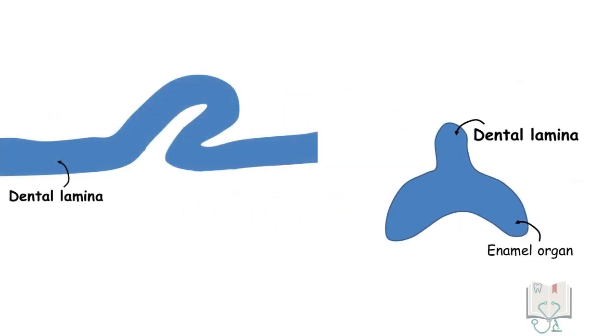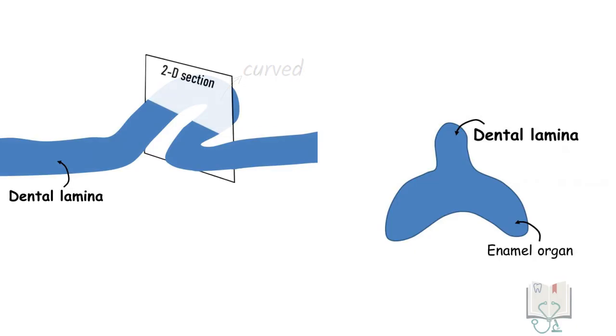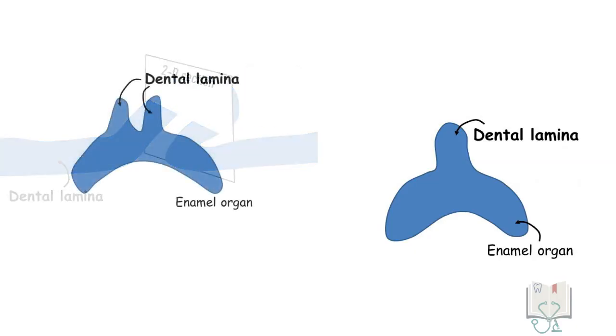So, if the dental lamina is curved in some place, in a two-dimensional view of the cut section it appears as if two laminae are present.